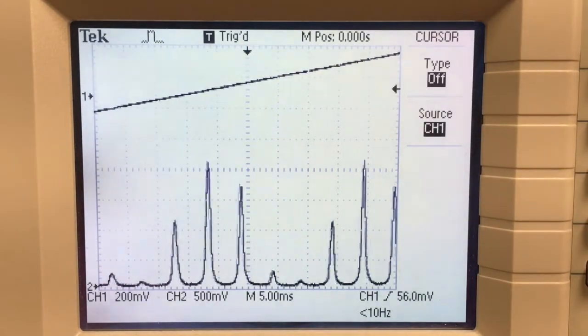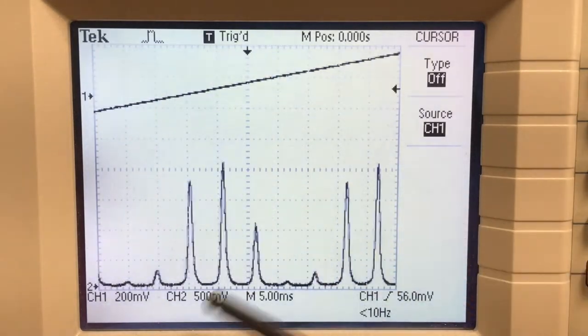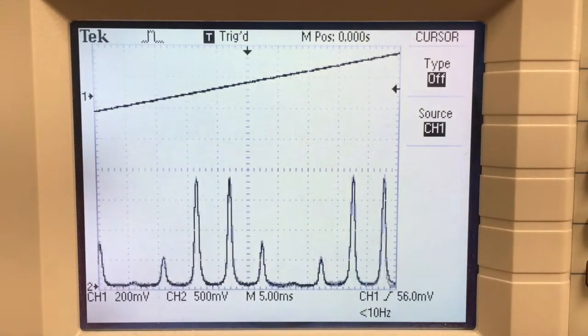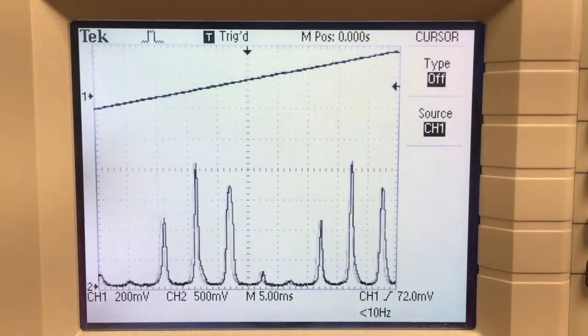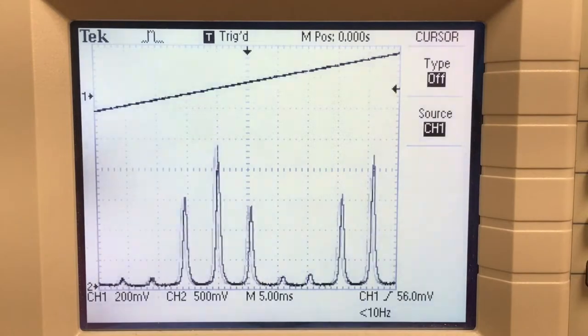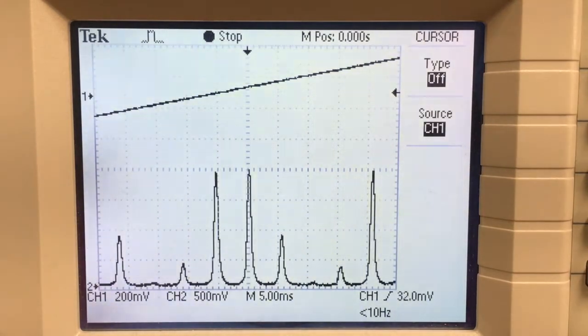And I want to freeze it just as one of those peaks is at t equals zero, ideally one of the bigger peaks here. And so between playing with the trigger and the run stop button, I can freeze it right there with this peak right on the center.